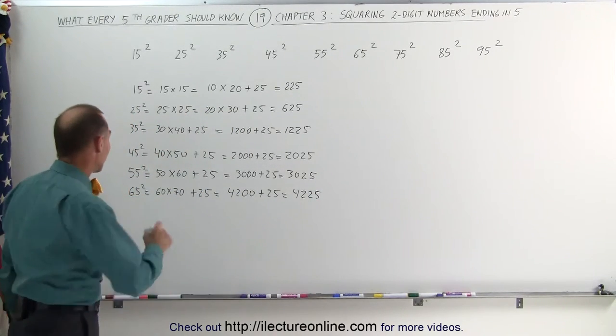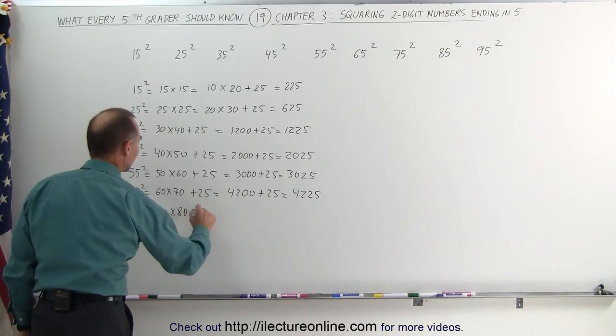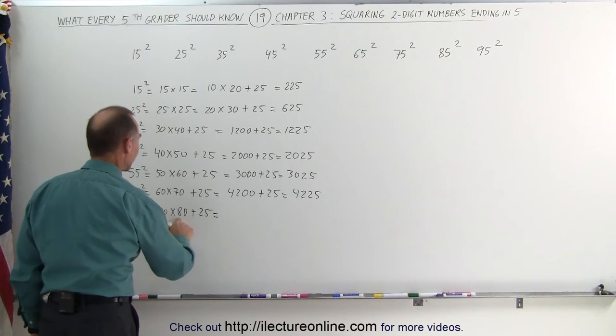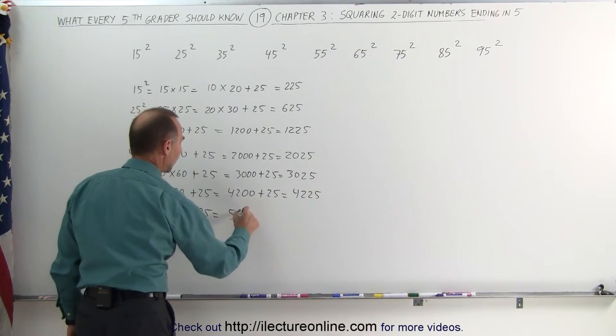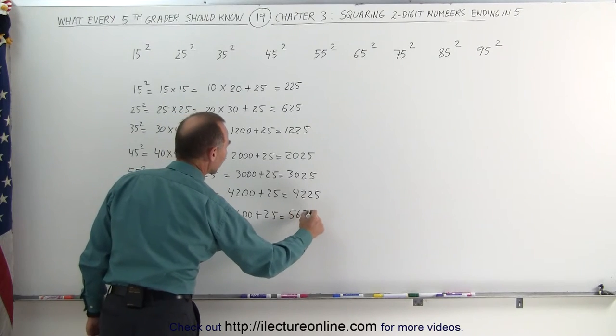Now 75 squared. 75 squared is the same as 70 times 80, plus 25. 7 times 8 is 56, add 2 zeros, add 25 to that, you get 5,625.